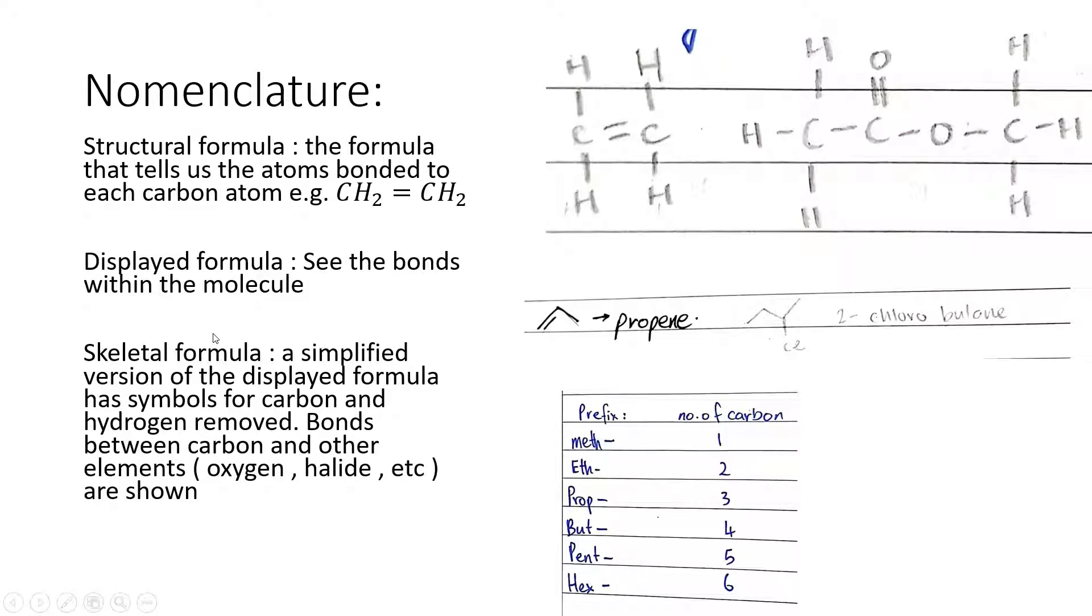Next up we have the skeletal formula. It's a simplified version of the displayed formula and has symbols for carbons and hydrogen removed. Like you can take an example as propene. Basically only the carbon skeleton is shown and nothing else. There's no bonds between hydrogen. We just know there's three hydrogens over here, one hydrogen over here, and two hydrogens over here, but they're not shown. However, bonds between carbon and other elements such as oxygen, halides, and other elements are shown as such in dichlorobutane. We have the four carbon skeleton and one chlorine molecule which is shown by the bond over here.